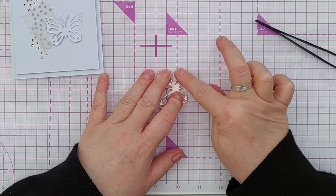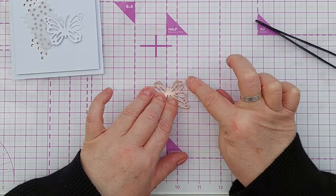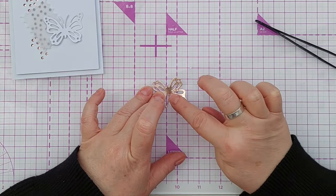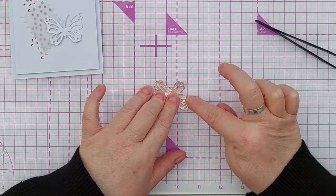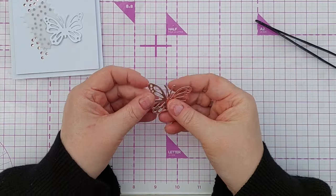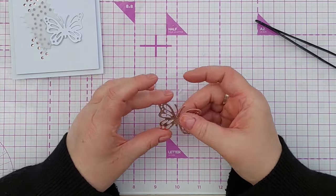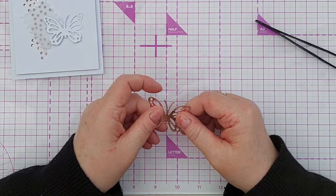Press that down, it will have been pressed down by the die cutting but this helps smooth out any wrinkles and lines and things and you'd never know really looking at that that it was cut from a bit of cardstock that had three pieces of washi tape on it.